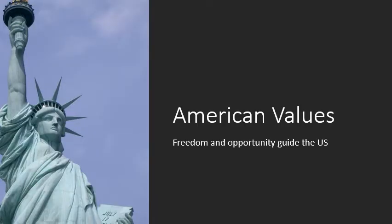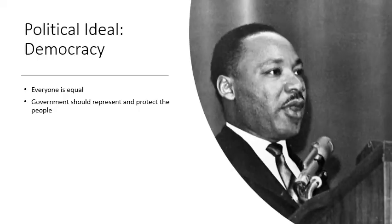We've talked a lot in this class about the American ideal, the American dream. The idea of freedom and opportunity are a guide to the United States. The big political ideal is the idea of democracy, and the underlying philosophy is that everyone is equal. While the United States has not always lived up to this promise, that is the promise of democracy — the government should represent and protect the people, with the consent of the governed, as Jefferson says in the Declaration of Independence.